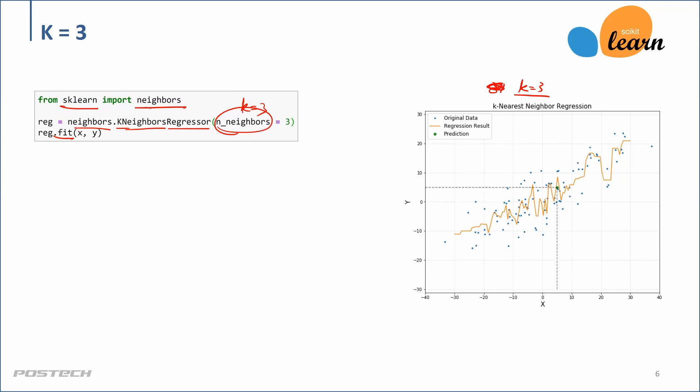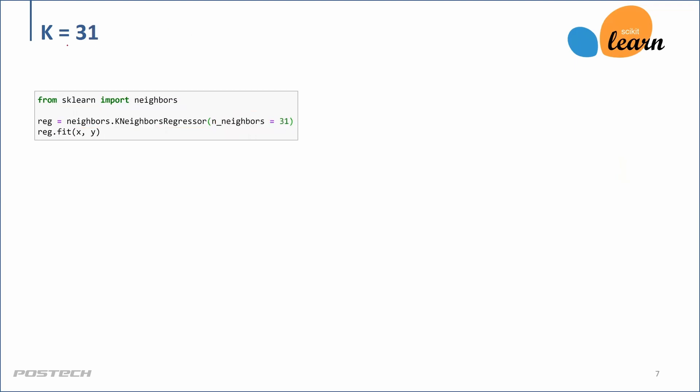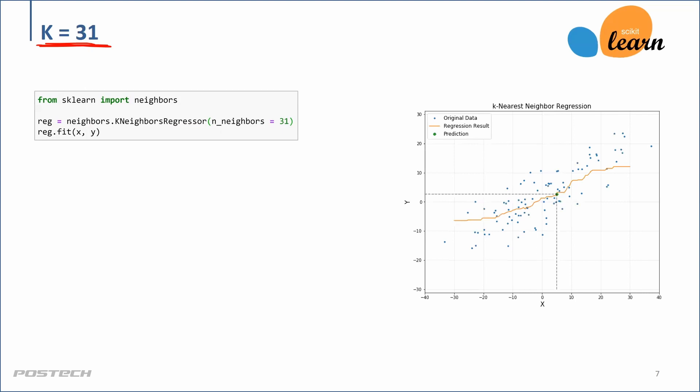With k equal to 3, the result is kind of too noisy. So what we can do is increase k — say to 31, meaning we take 31 nearest data points. The result is much smoother.